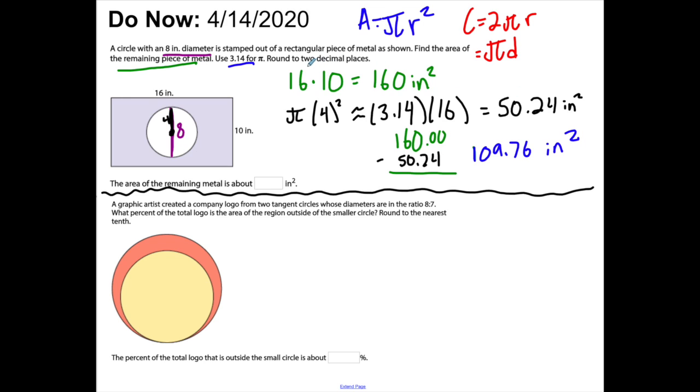They want me to round to two decimal places, so that's what I'd report: 109.76 inches squared. If need be, please rewind so you make sure you understand that.